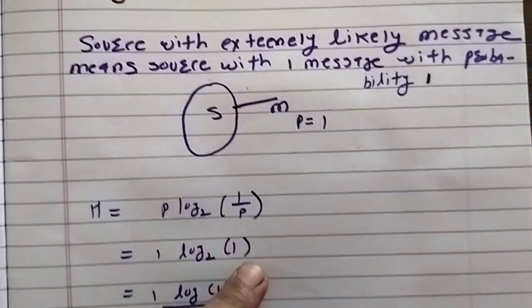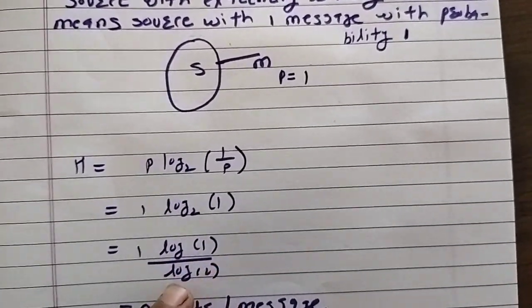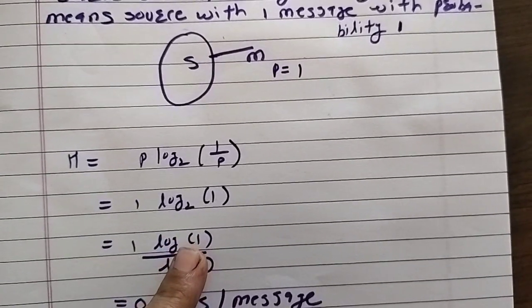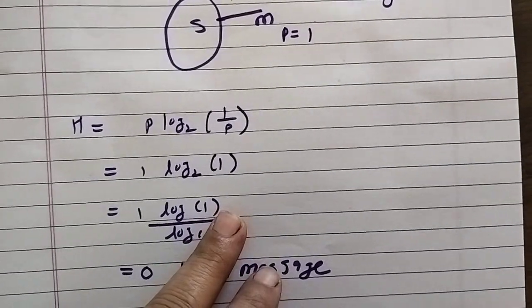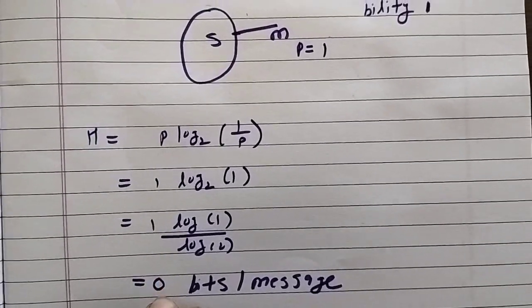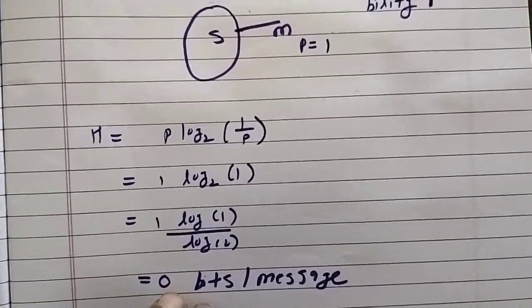Probability is 1 log base 2 of 1. So, 1 log of 1 divided by log 2, this is log to the base 10. Now, log to the base 10 of 1 is equal to 0. Log of 1 is equal to 0.